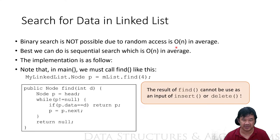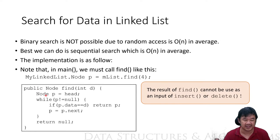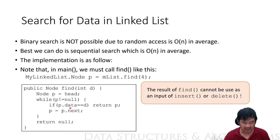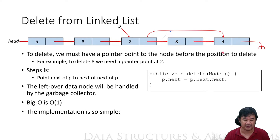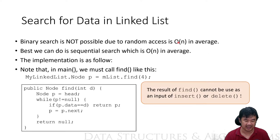Now to search for data in a linked list, you do something similar to a getter and setter. You start from the first node, and if it's not null, you check if the data is equal to d. If it is equal, you return that pointer — so this pointer is going to point to the found node.